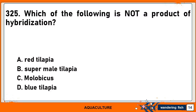Which of the following is not a product of hybridization? A. Red Tilapia. B. Super Male Tilapia. C. Malobicus. And D. Blue Tilapia. There are two correct answers in this item: B. Super Male Tilapia and D. Blue Tilapia.